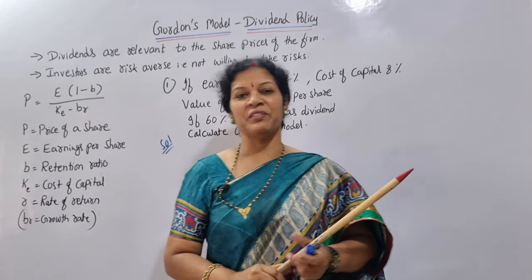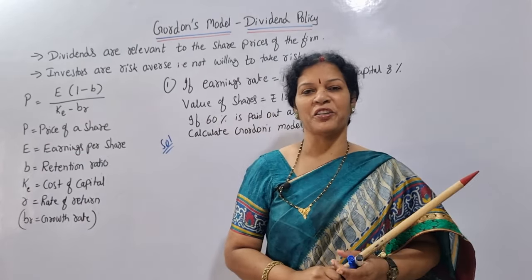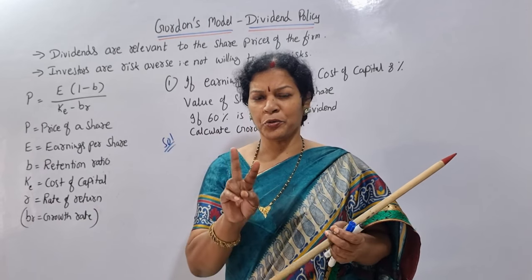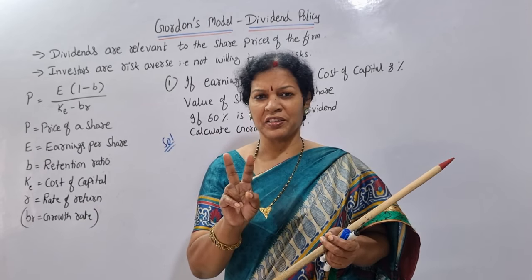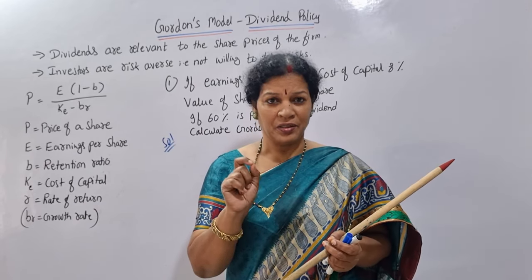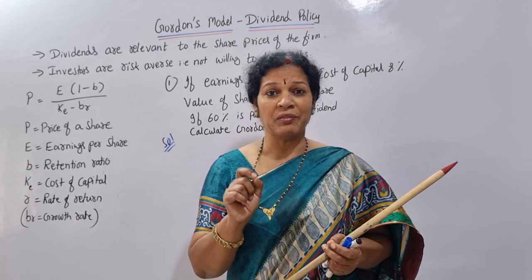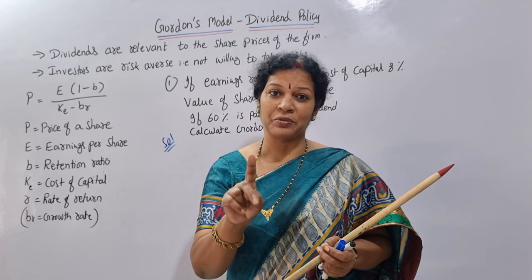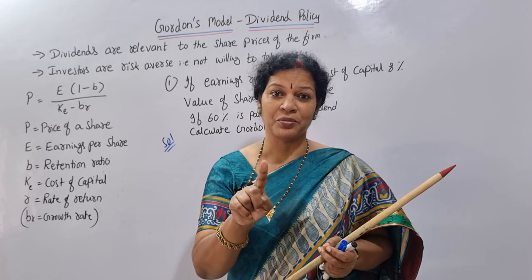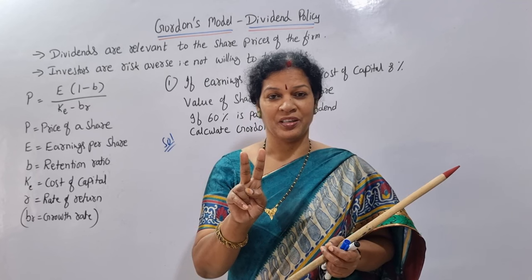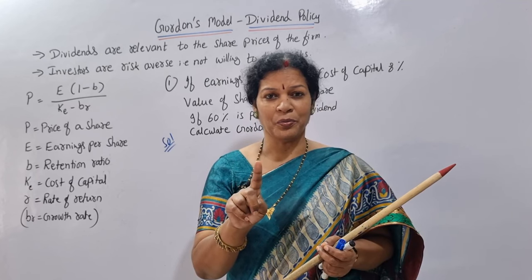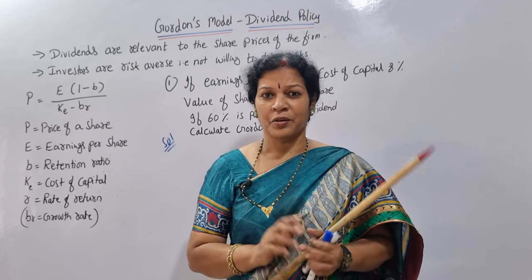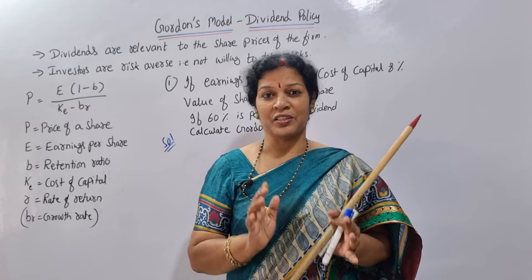Hello dear students, welcome to Devika's Commerce and Management Academy. Dividend theories — there are two types: irrelevance and relevance theories. We are talking about relevance theories. In relevance theories, we have two types: Walter's model and Gordon's model. Walter's model we have seen in the last classes. Now today we will see Gordon's model.